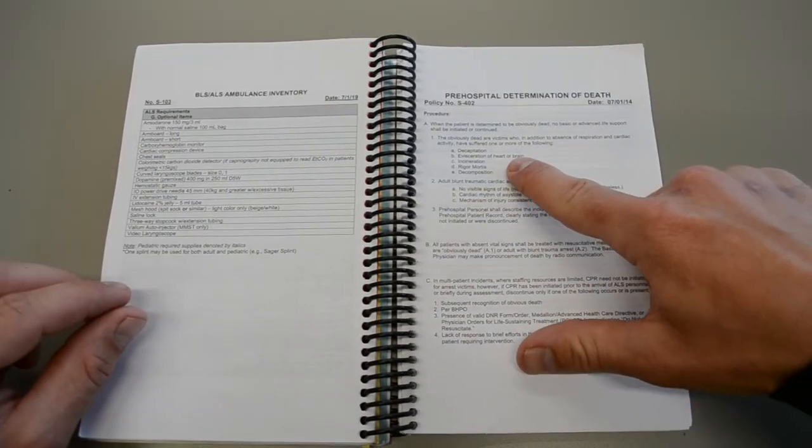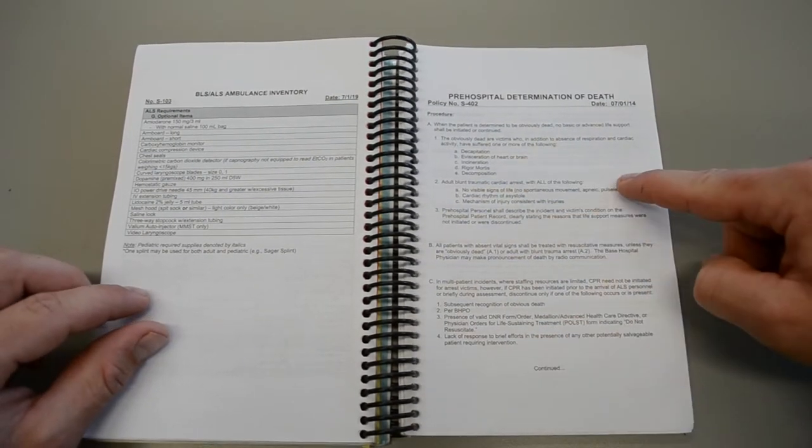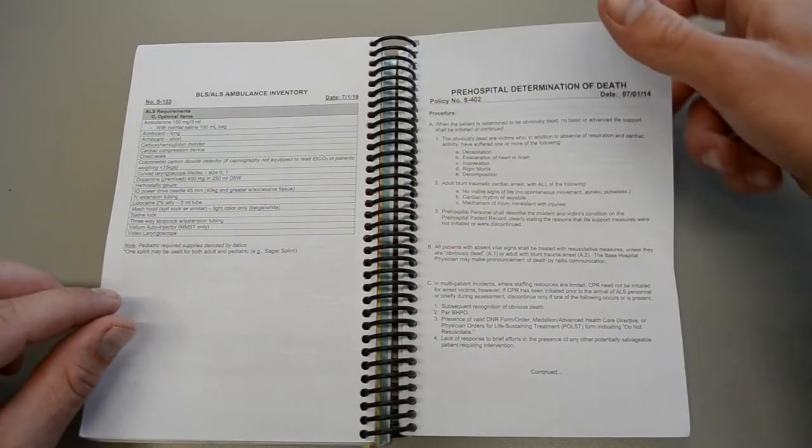Pre-hospital determination of death. These five criteria is something that you should know. However the rest of it is a little more oriented towards ALS personnel.